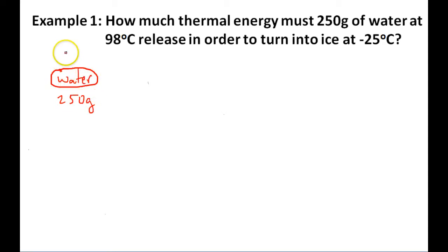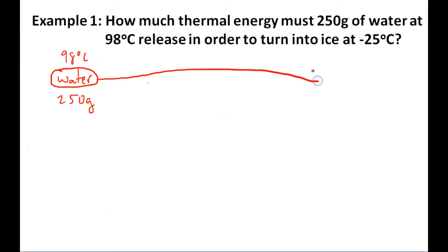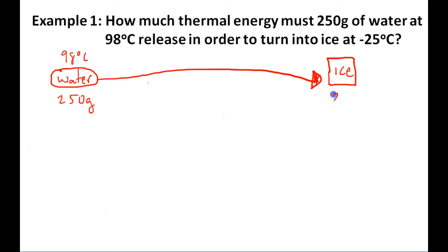What's going to happen to this water is that over time it's going to turn into ice. This water is going to turn into ice — its mass is going to stay the same, however its temperature is going to drop to negative 25 degrees Celsius. So we've got some water, it's cooling down, it's turning into ice at negative 25 degrees Celsius.